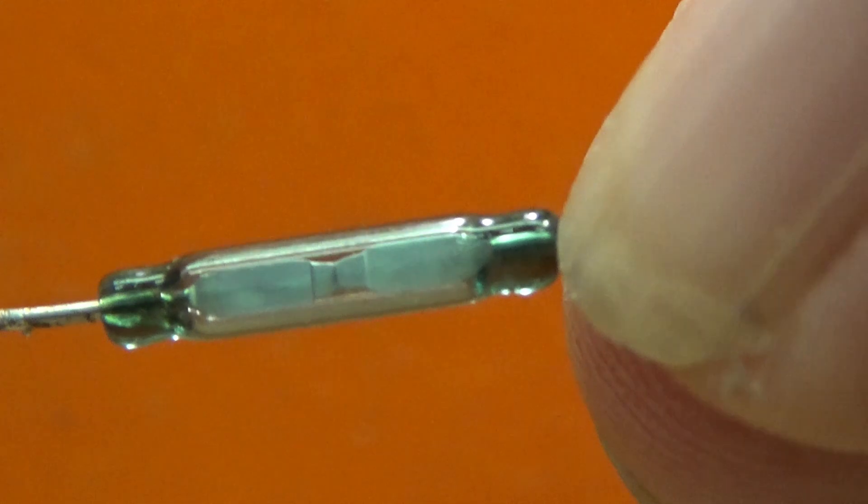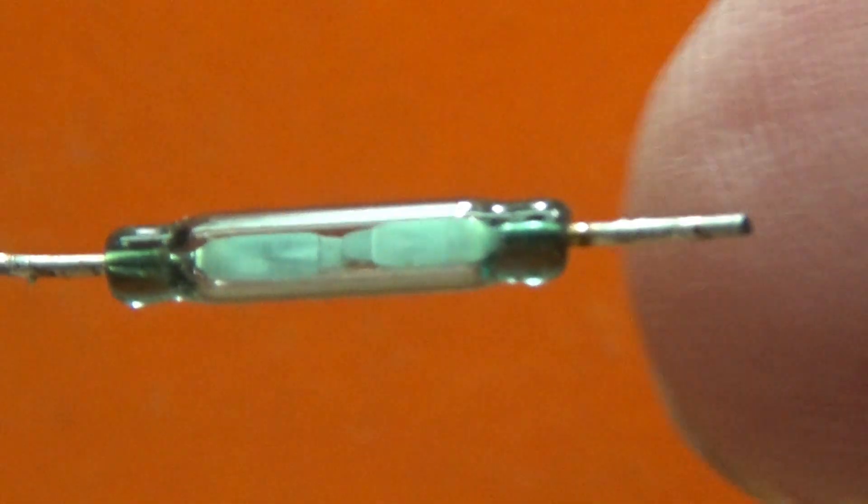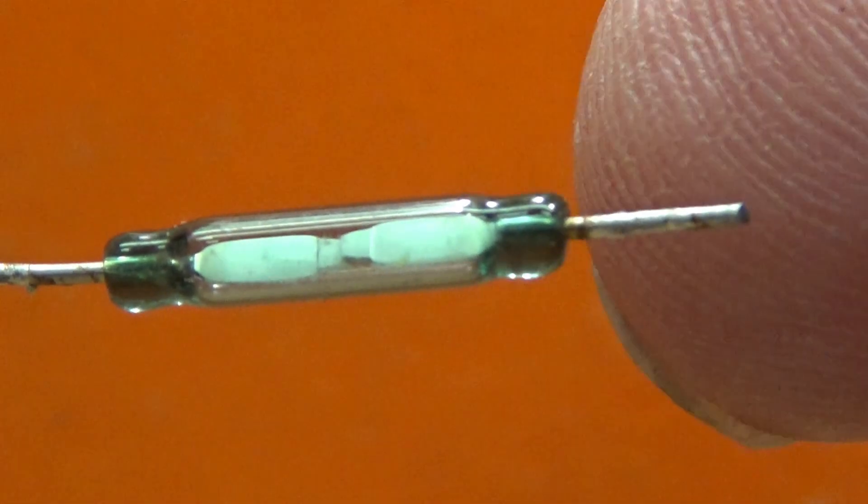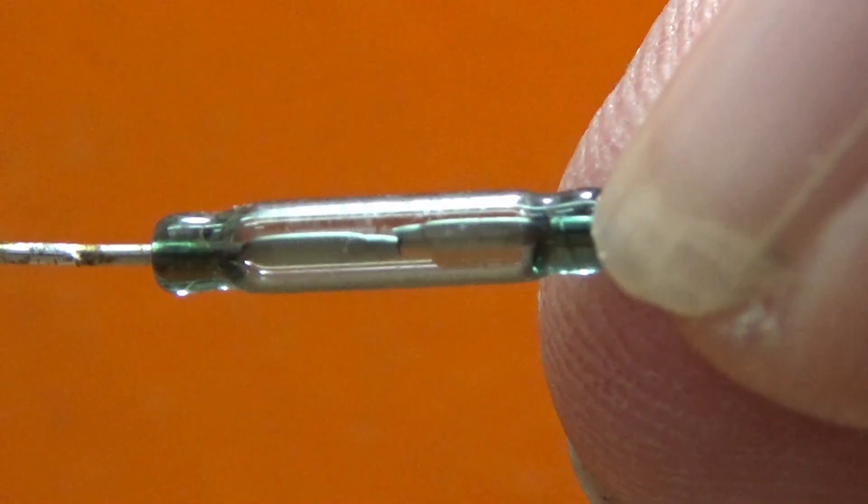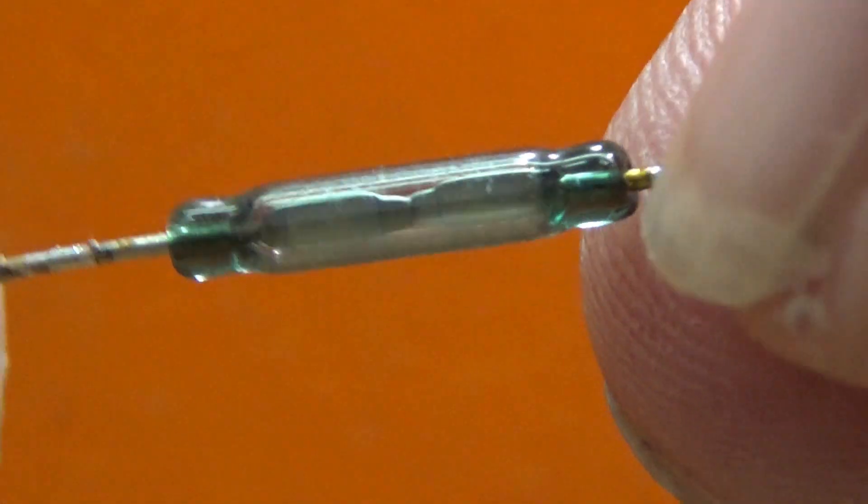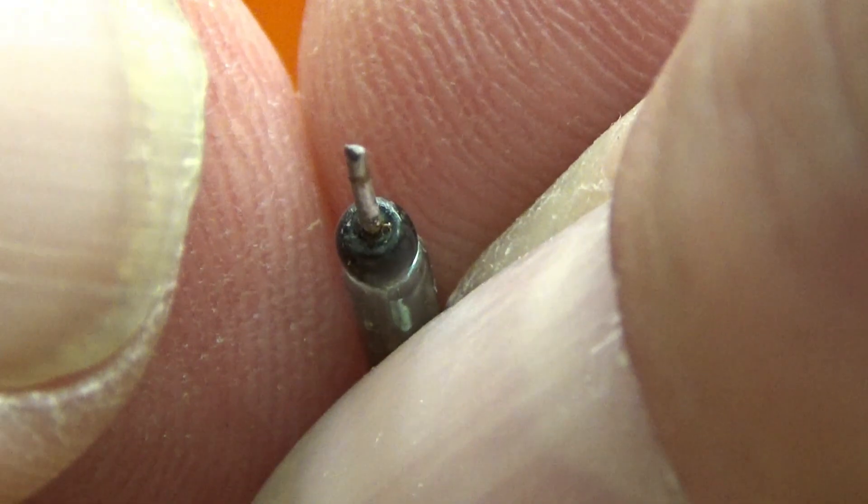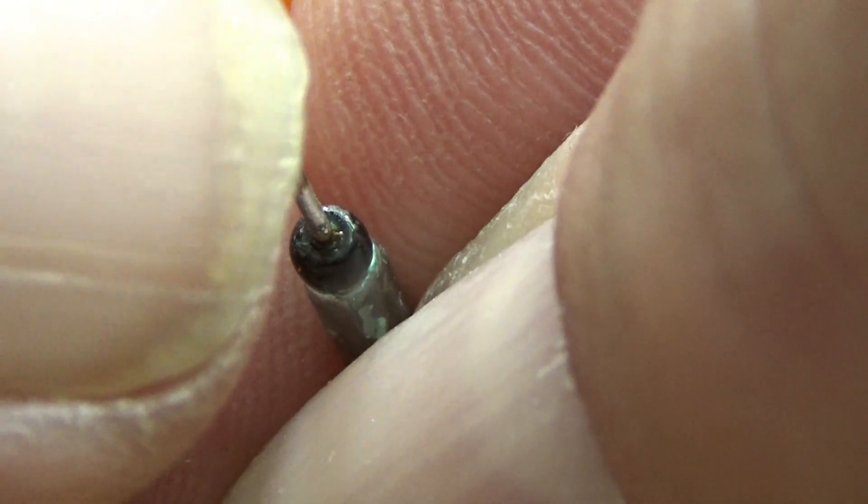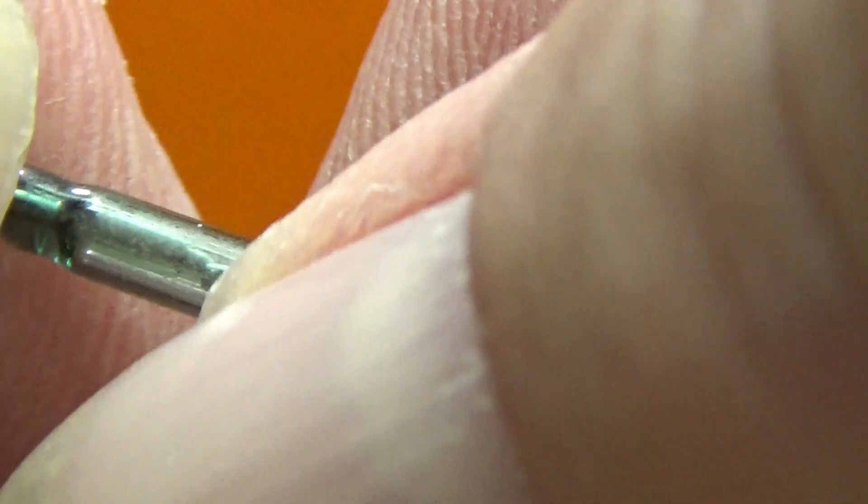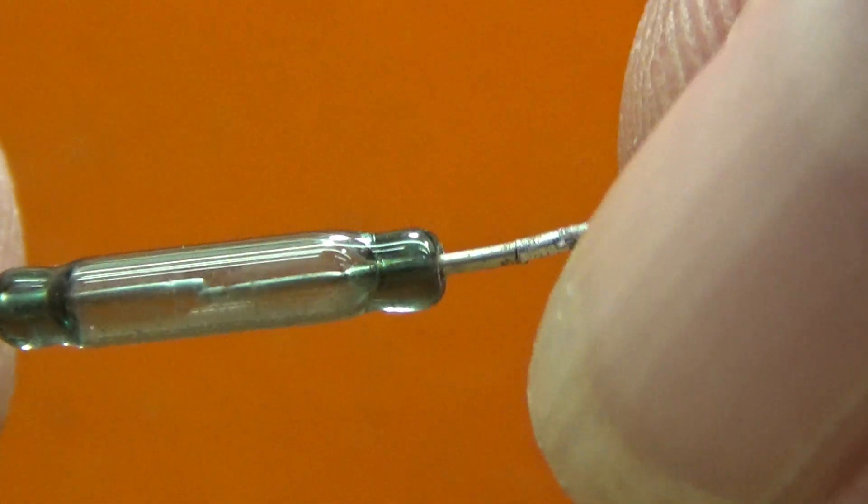Now I can only assume that what's actually happened here is that where the wires go in, they look quite tarnished. And I'm guessing that even though they look OK, these seals at the end here have failed in some way and the air has got into this bulb and oxidised the actual contacts themselves.